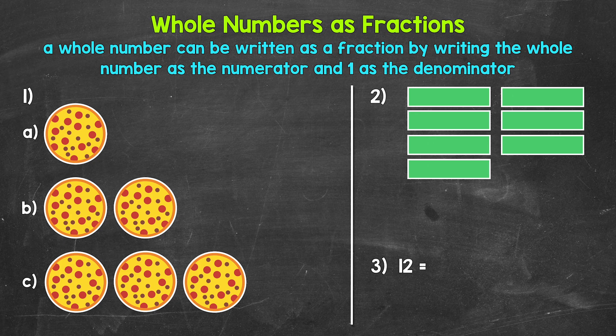For number 1, we're going to have three sections. We're going to write 1, 2, and 3 as fractions, and we'll use pizzas to help us visualize this. Let's start with A, where we have one pizza — one whole pizza. Let's write one as a fraction. This pizza has been divided into how many equal parts? Just one.